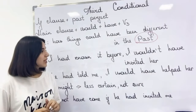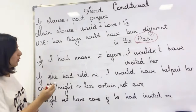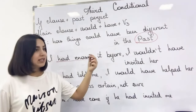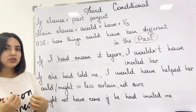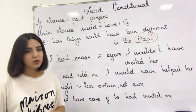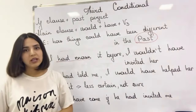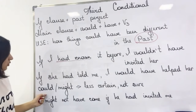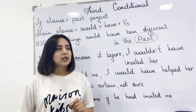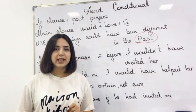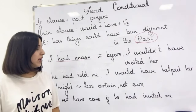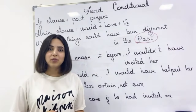Let's pay attention to our sample sentences. If I had known it before, I wouldn't have invited her. So I didn't know that — that's why I invited her. But if I had known, things could have been different in the past. Or secondly: if she had told me, I would have helped her. We don't just use 'would' in third conditional — we can also use 'could' or 'might'. These two modals are used when we are not sure about the consequence or result of the past action. We are less certain about that. So: I might not have come if he had invited me. He didn't invite me in the past, so I didn't go there.